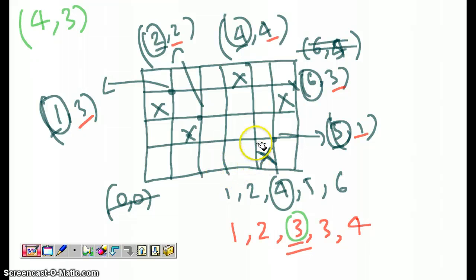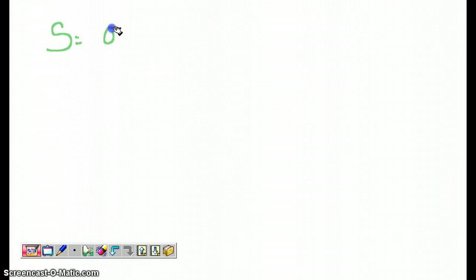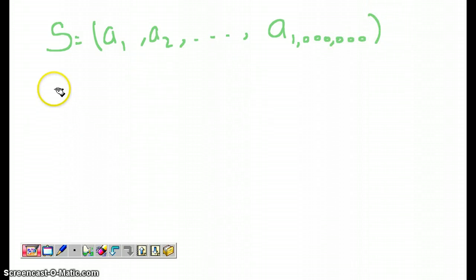On the grid, (4,3) means four across and three up — and that point will be the closest to all four people. You might ask why not use the average — but average doesn't work here. When the question is finding the nearest point to all people, the answer is always the median. Now the question is: given a large set of n points — say a million numbers — how do we find the median efficiently?